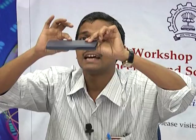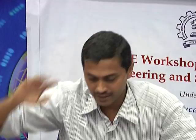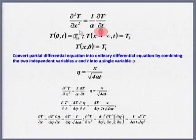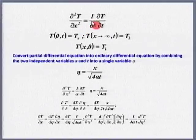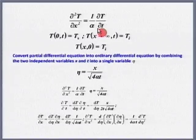Let us write the equation. The temperature is now a function of space only — x, that is thickness. In the other directions it is infinite. So now I have ∂²T/∂x² = (1/α)(∂T/∂t). This equation has come from the heat diffusion equation.